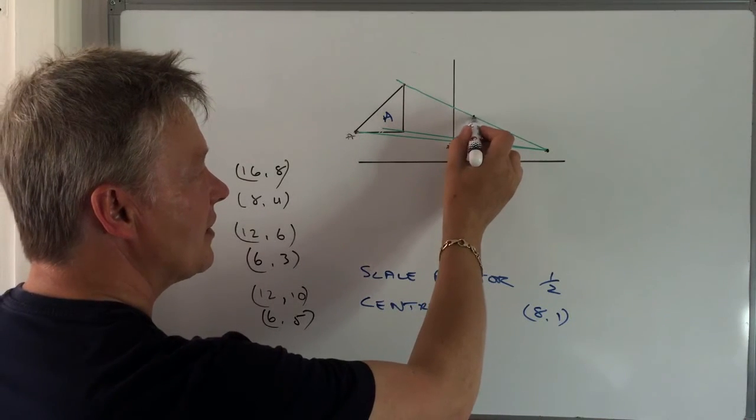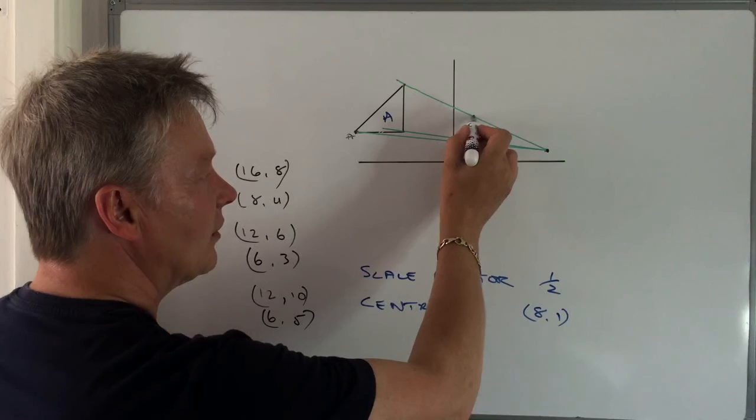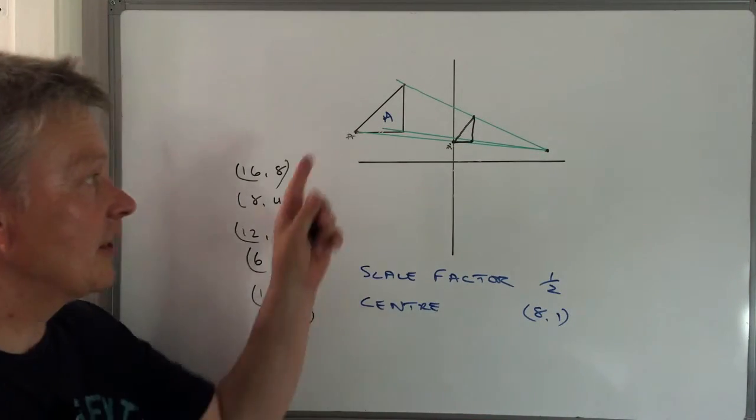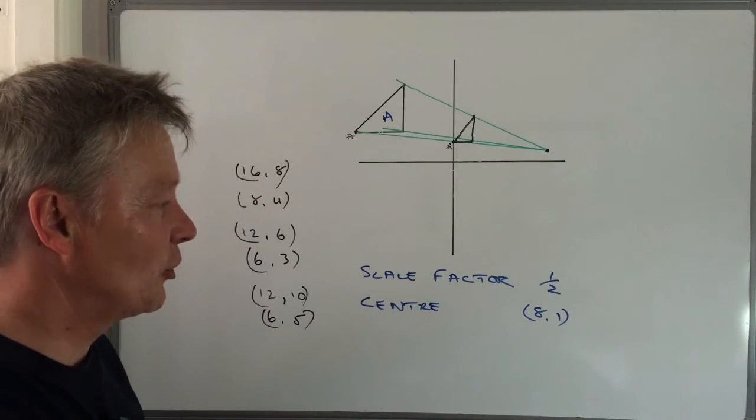And what I find is that I can create a triangle like that, which is exactly half the size of triangle A. I'm going to call that triangle B.